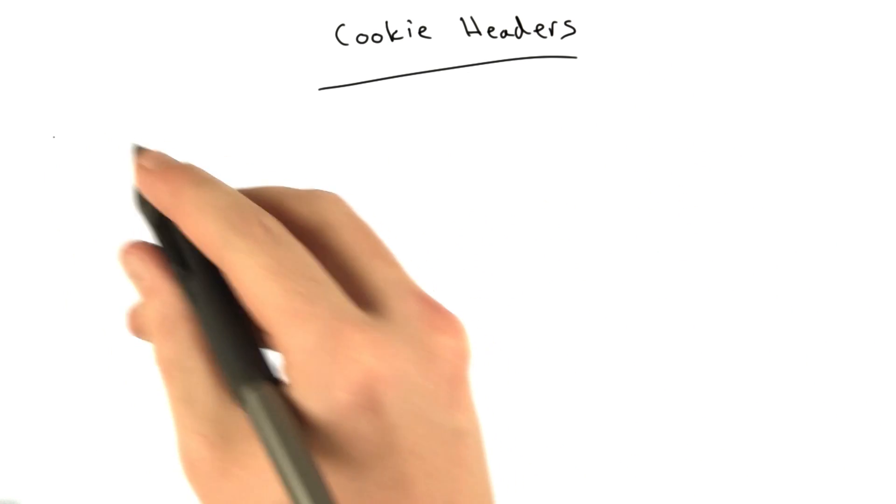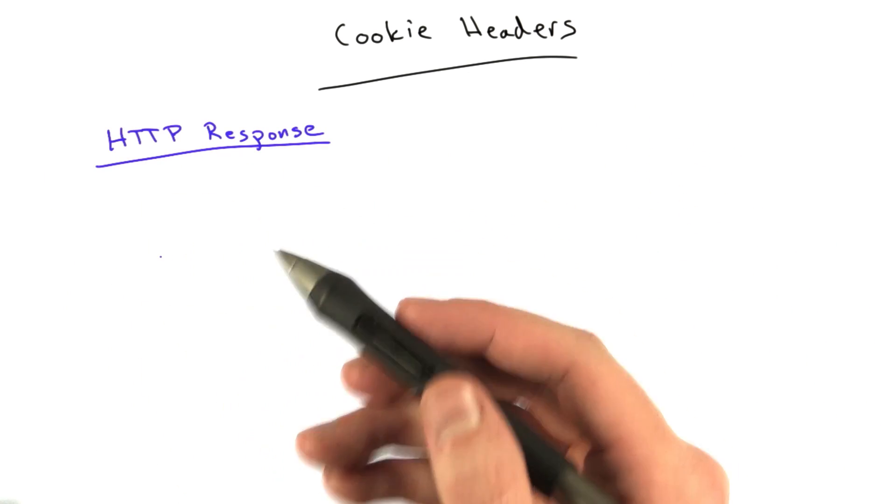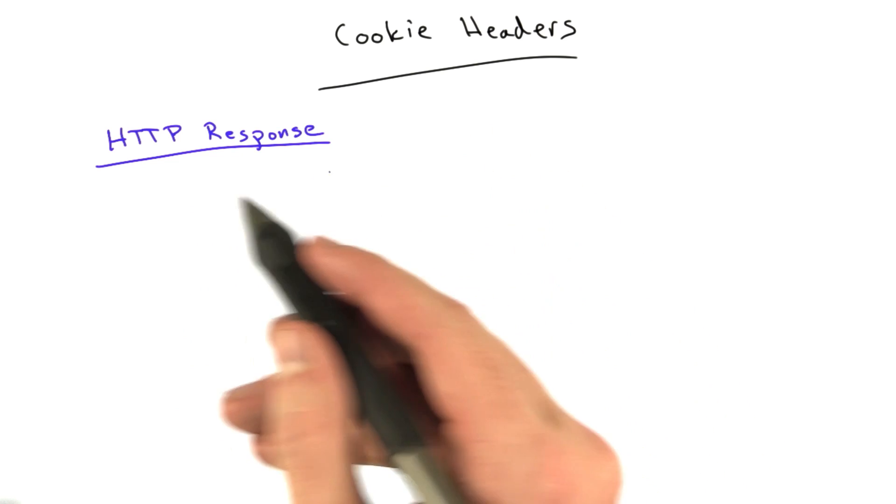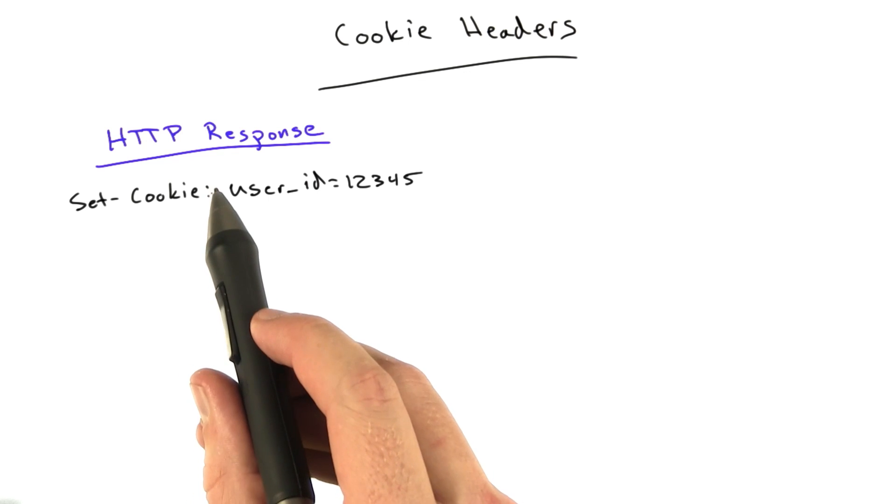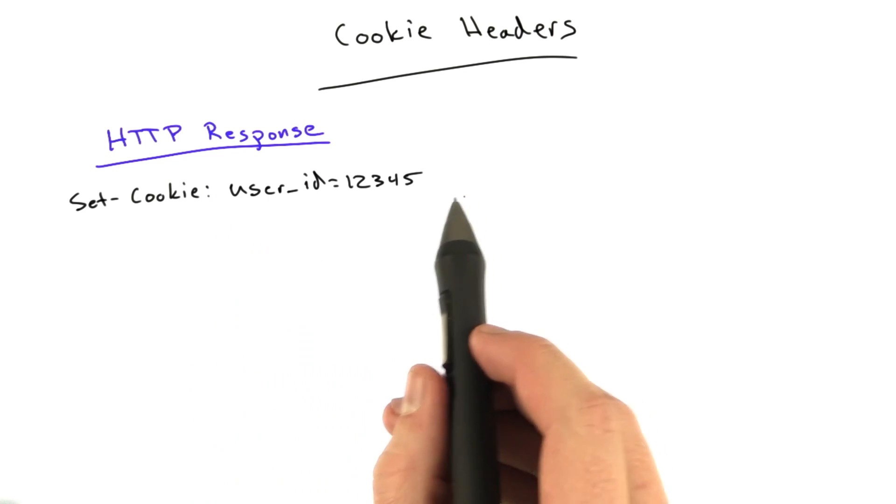So when a server in an HTTP response wants to give you a cookie, wants to assign a cookie to your browser, it uses a header that looks something like this. The header name is set-cookie. Like all headers, it's followed by colon and then the space, and then the value of the header.